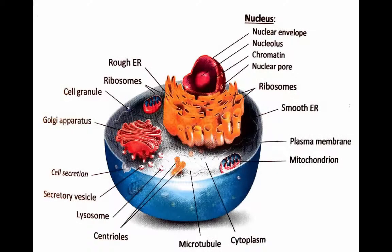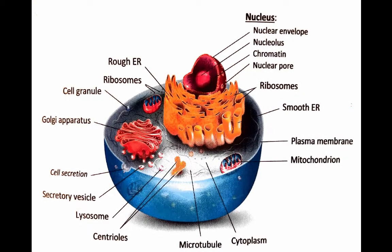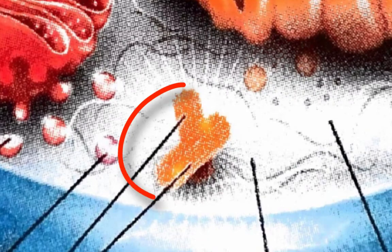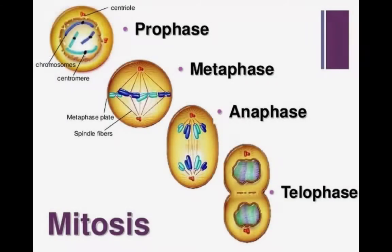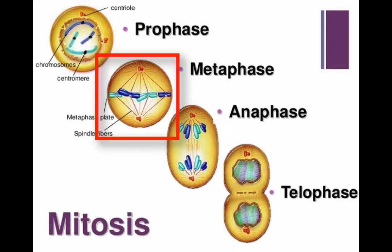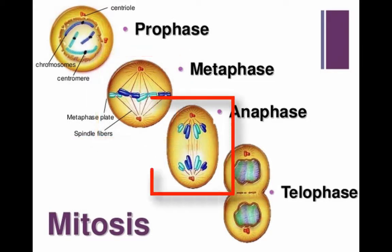Another protein-based organelle is the centriole. These log-shaped structures are often found in pairs in the cell and have a role in cell division. You may recall from grade 8 science talking about spindle fibers originating from the centrioles once they have migrated to the opposite poles during metaphase. Then during anaphase, these fibers will shorten, pulling the sister chromatids apart.